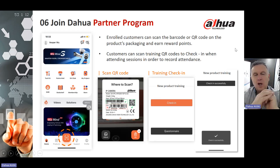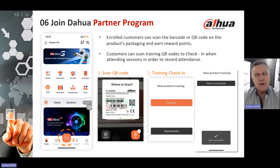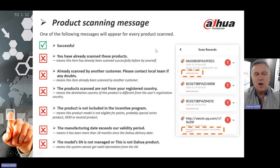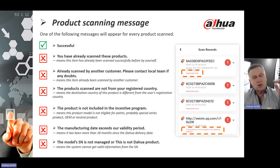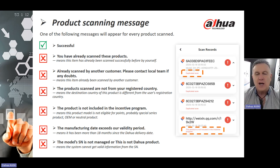In the Partner Program, enrolled customers can scan the barcode or QR code on product packaging to earn reward points. Customers can also scan training QR codes to check in to a training class and record their attendance. When you scan a product, you will hopefully receive a green tick, which means the scan was successful. However, there are also combinations that may give you a cross — meaning there is some issue with the product scanned. For example, it has already been scanned by another customer, or you have already scanned this product.